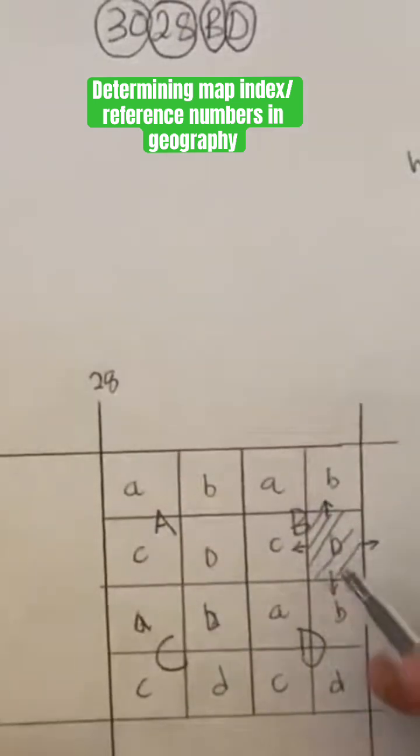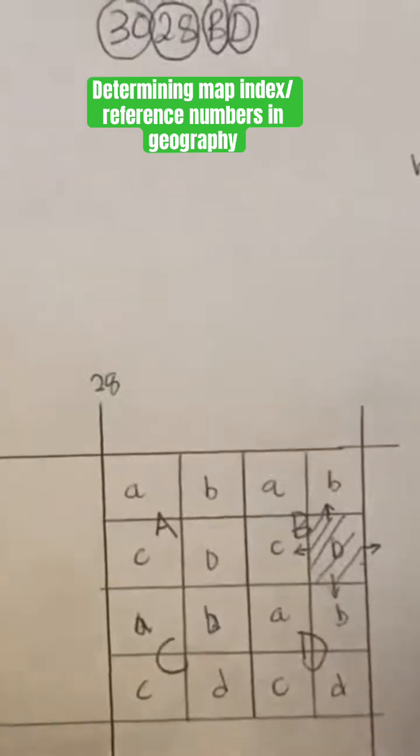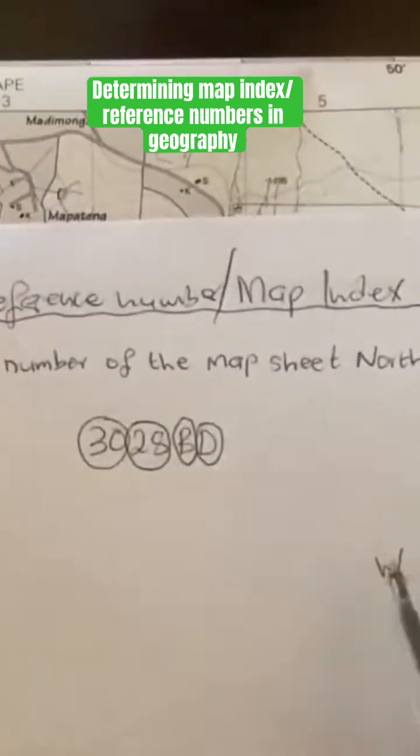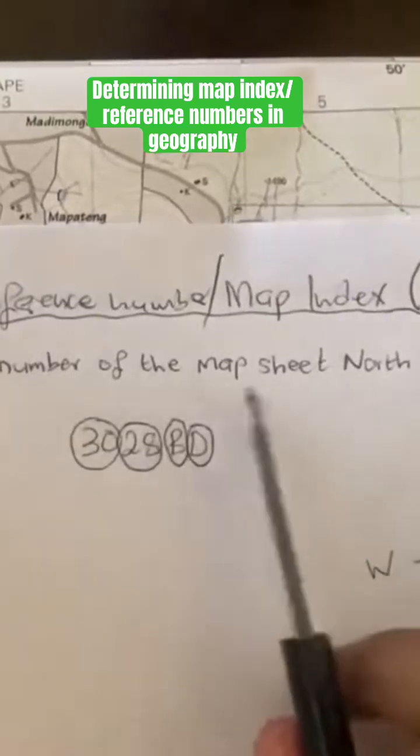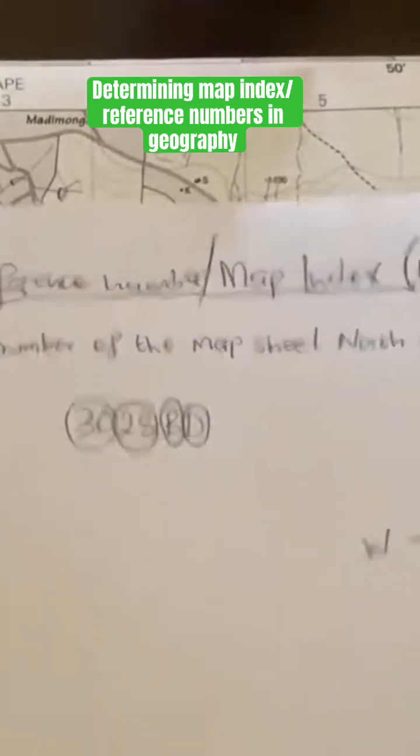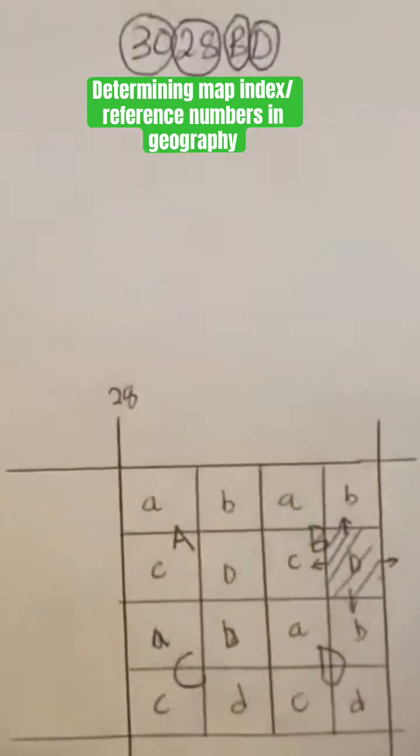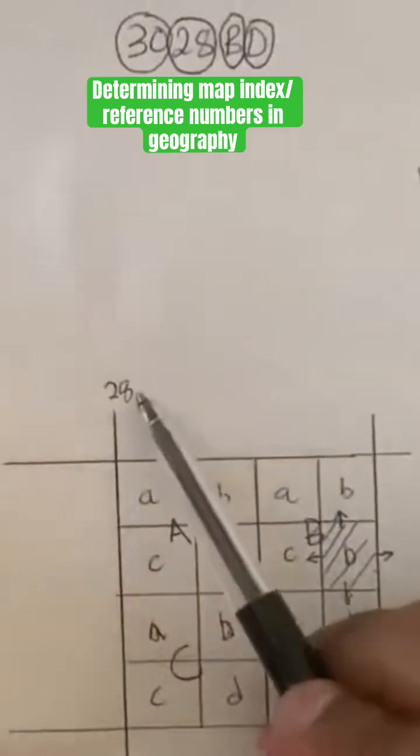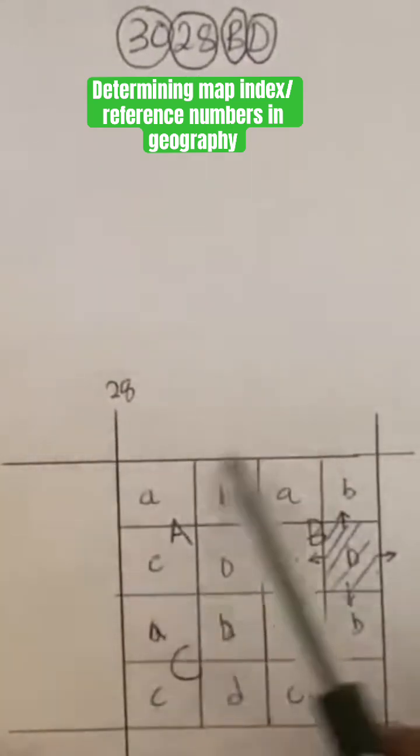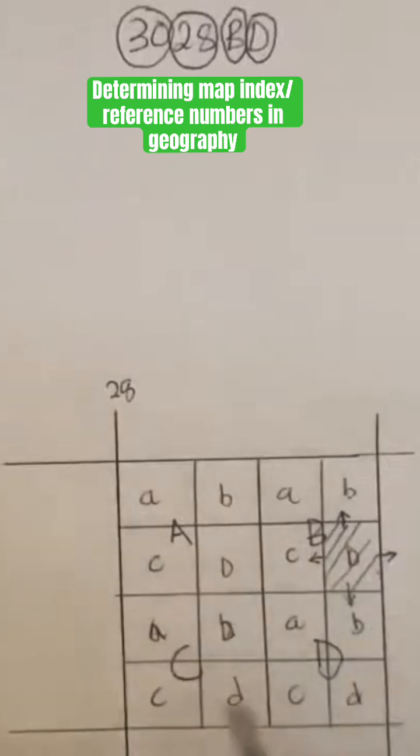Okay, so remember the question says what is the index number of the map sheet north of Matatia? Now, as I said, 30 and 28 are actually representing this block over here. Once you go over on the other side...